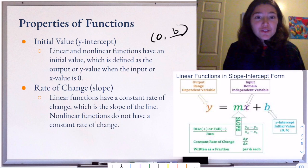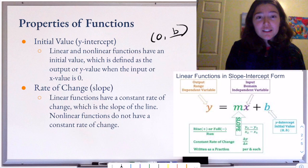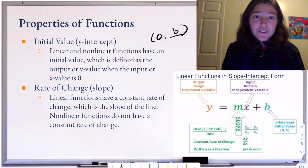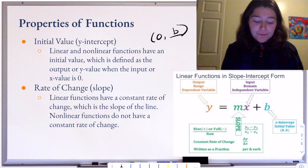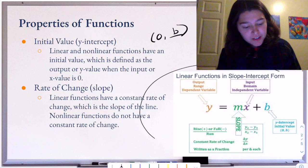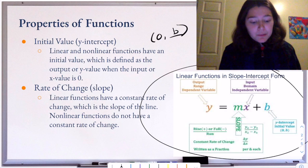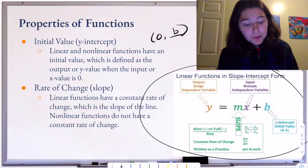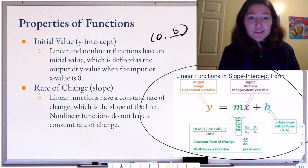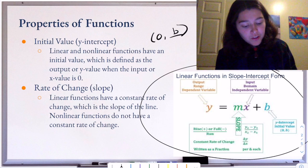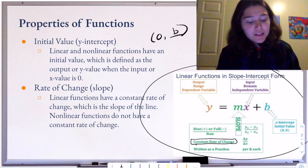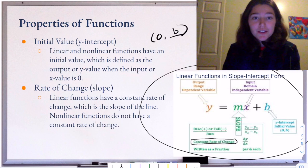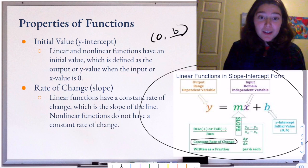There's also the rate of change. For linear functions there's a constant rate of change called the slope. There are still rates of change for nonlinear functions — they're just not constant, so we can't give one number to it. As a reminder, slope-intercept form is y equals mx plus b, where y is our output, m is the slope (the change in y divided by the change in x, the constant rate of change, written as a fraction), x is our input, and b is the initial value or y-intercept for linear functions.